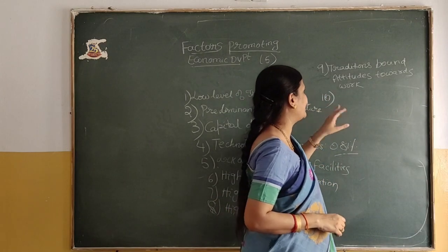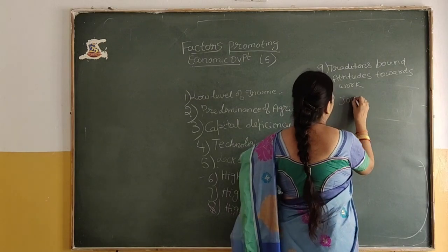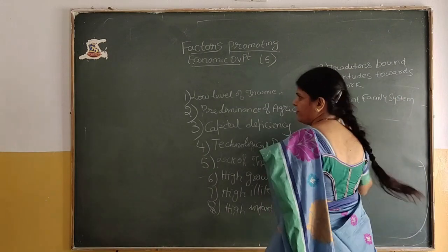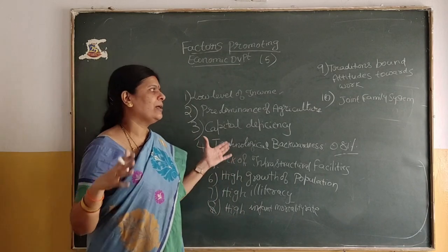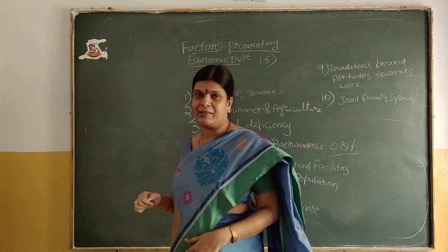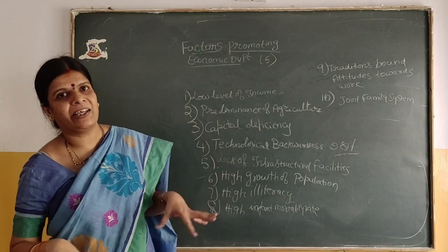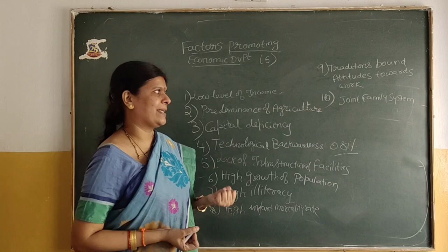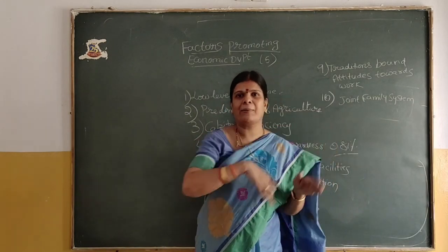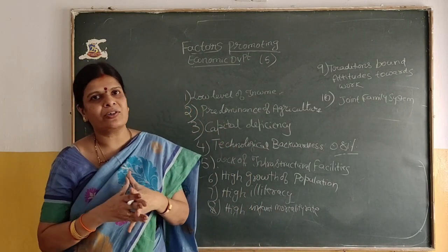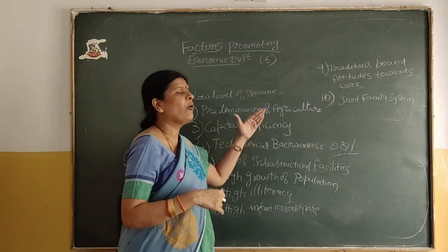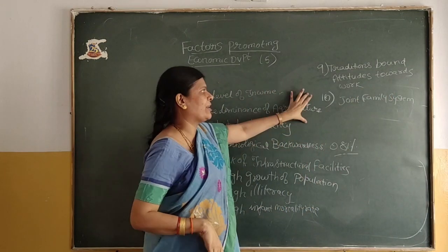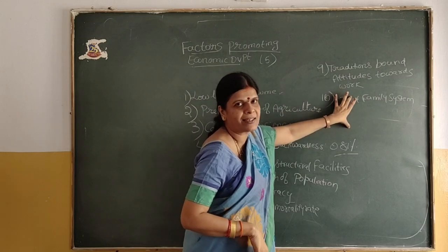The last characteristic is the joint family system. In a joint family system, so many people in the family depend on only one member — the head of the family. He will earn and because so many people depend on one income, the level of income will be less. Also, they do not want to shift from one place to another — because of the joint family, they all want to stay together and do not want to move. This is one of the factors and characteristics of the Indian developing economy.